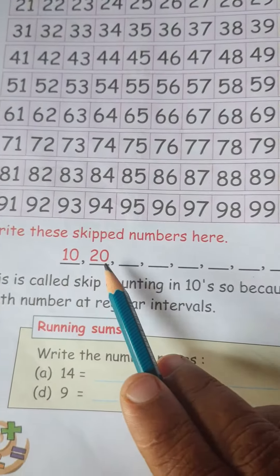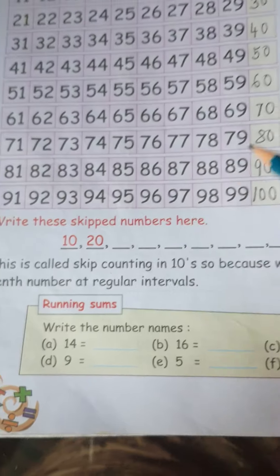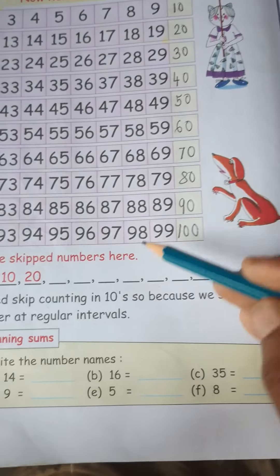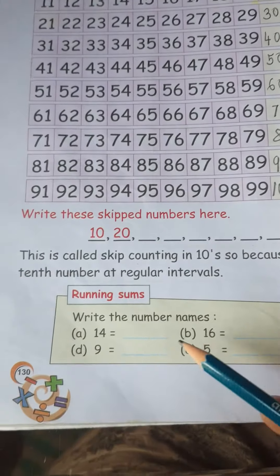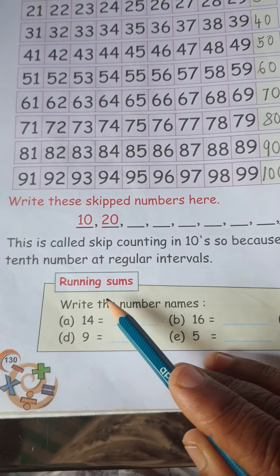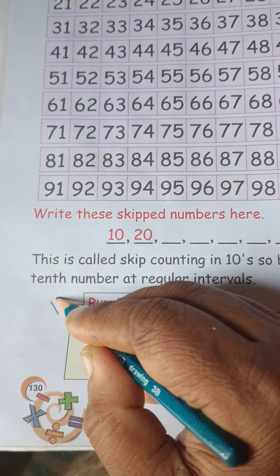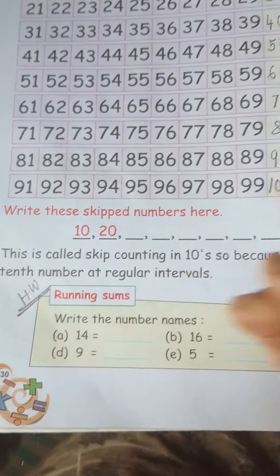Then what is here? Write these skipped numbers here. See, 10, 20, 30, 40, you have to write one by one. And see what is here? Running sums, it is for your homework.